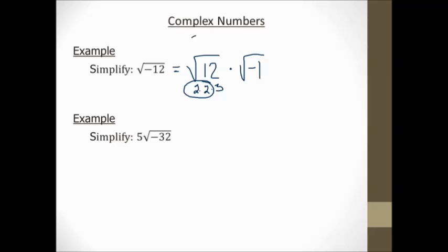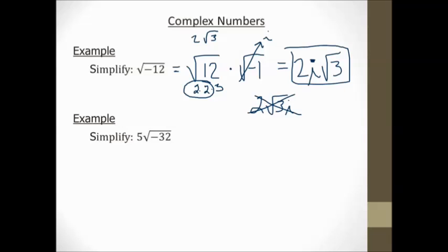But the square root of negative 1 is going to be an i. So my answer is going to be 2i square root of 3. Now, the reason that I put the i before is if I put it after the radical, like if I put it like this, it's hard to tell if that's actually under the radical or not. So in order to keep from doing that, in order to keep from getting confused, I always put the i in front like a coefficient. So my answer here is 2i square root of 3.